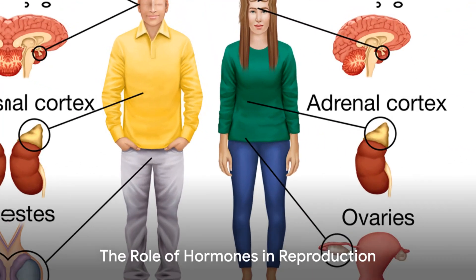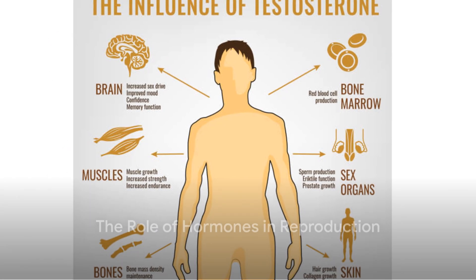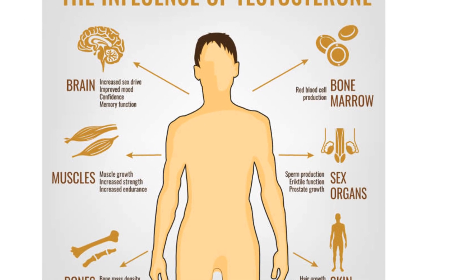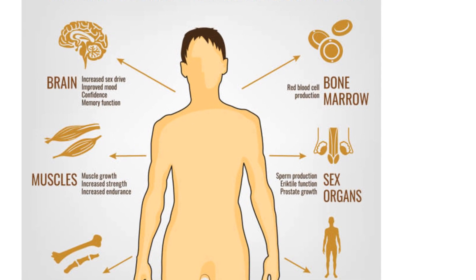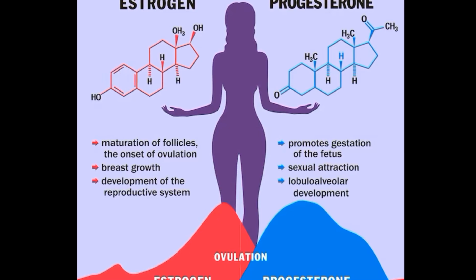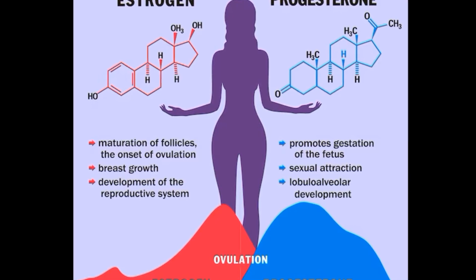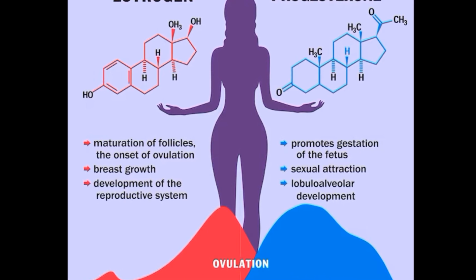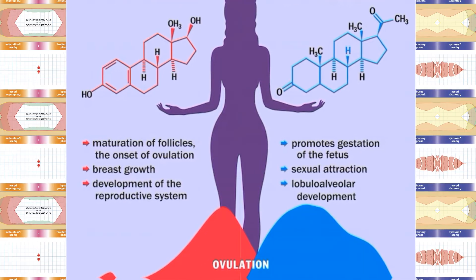The dance of reproduction is regulated by hormones. In males, testosterone is the driving force behind the production of sperm and the development of secondary sexual characteristics. In females, a symphony of hormones, including estrogen and progesterone, regulate the menstrual cycle and prepare the body for potential pregnancy.